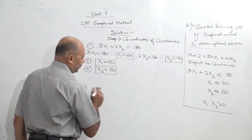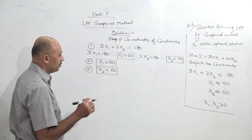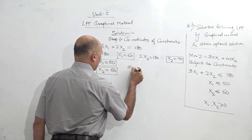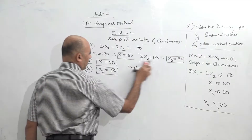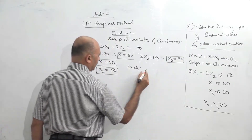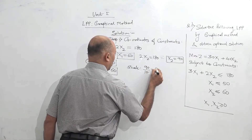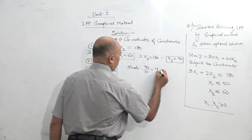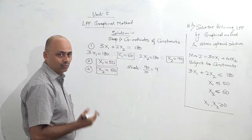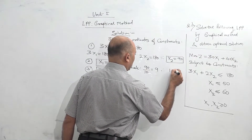Now when we are going to plot this on the graph, we have to draw the graph up to a certain scale. A thumb rule for finding scale value: select the highest value of all coordinates — 60, 90, 50, 60 — so the highest value is 90. Divide it by 10, so you get 9. We cannot take a scale of 1 is to 9; scale has to be a round figure like 1 is to 10, 1 is to 20, 1 is to 50. So therefore we will take a scale of 1 is to 10.